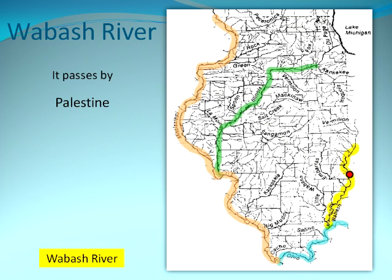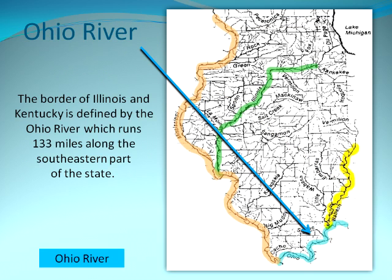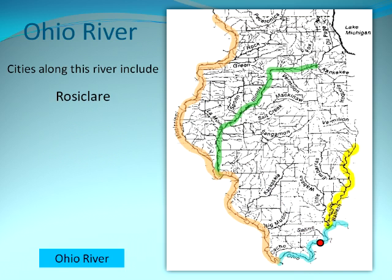The Wabash passes by Palestine and Mount Carmel. The border of Illinois and Kentucky is defined by the Ohio River, which runs 133 miles along the southeastern part of the state. Cities along this river include Rosiclair, Golconda, Brookport, Metropolis, and Cairo.